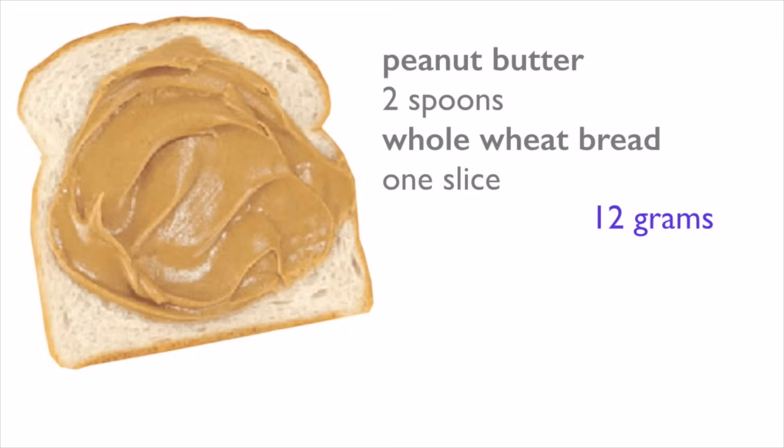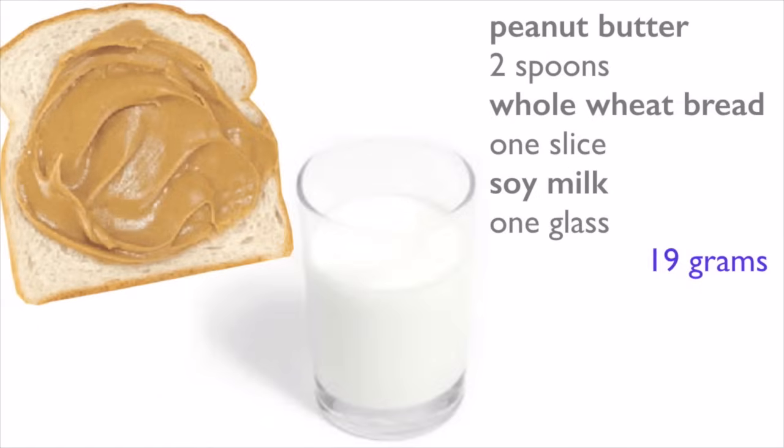If we put two tablespoons of peanut butter on a slice of whole wheat bread, we get 12 grams of proteins. And if we drink an eight ounces glass of soy milk together with it, which provides seven more grams of proteins, we get a total of 19 grams of high quality proteins.